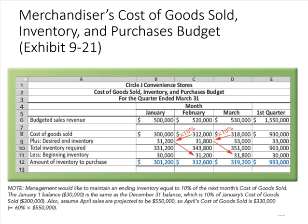Figures from this budget are then used as follows: cost of goods sold is used in preparing the budgeted income statement, ending inventory is used in preparing the budgeted balance sheet, and purchases of inventory are used in preparing the cash payments budget.